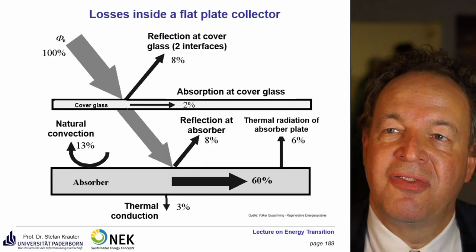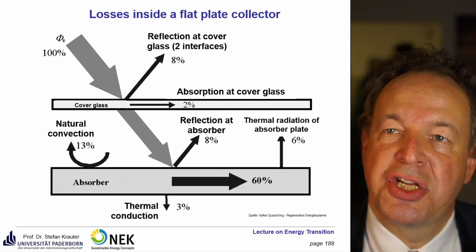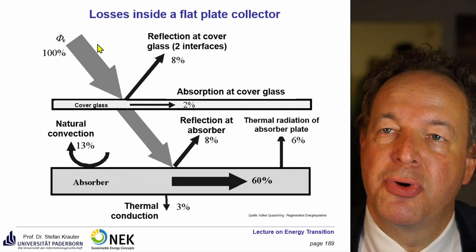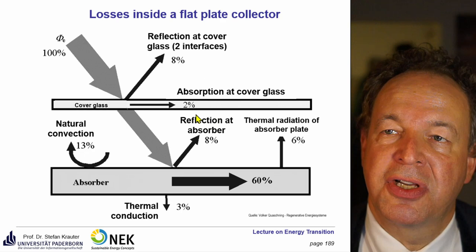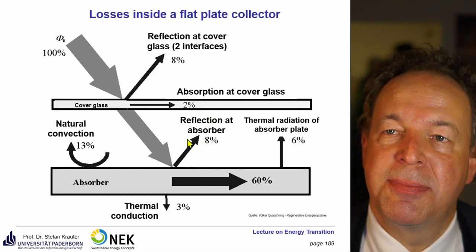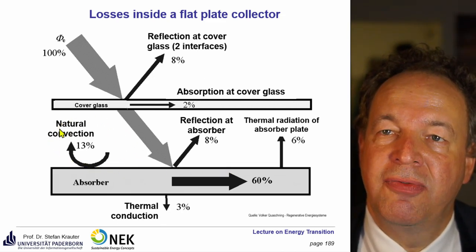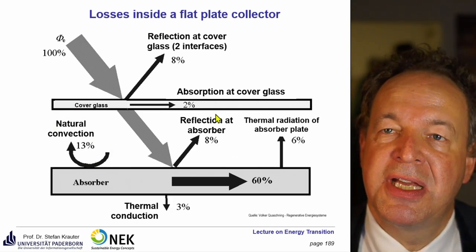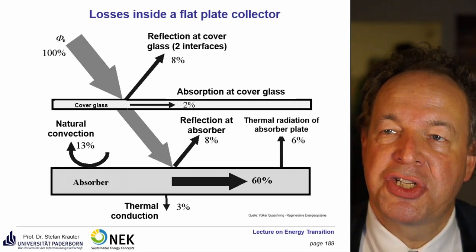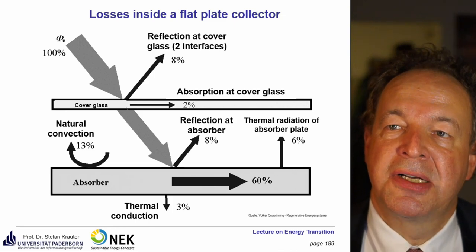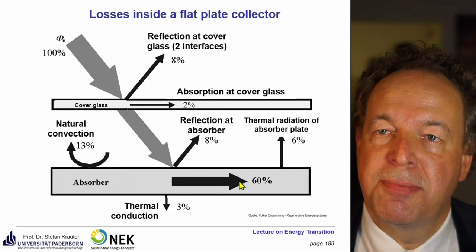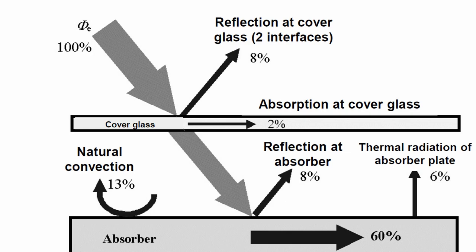Here are some typical quantities for a flat plate collector. Reflection at each glass interface is about 4%, so with two interfaces that's 8% loss. Absorption in the glass is typically 2%. Reflection at the absorber is typically around 8%. Natural convection accounts for about 13%, and this increases with wind and without a cover glass. Thermal radiation from the absorber plate is about 6%, and increases drastically with temperature since it scales with temperature to the power of 4. Thermal conduction is linear with temperature increase. Altogether, you typically get about 60% of the incoming solar power.